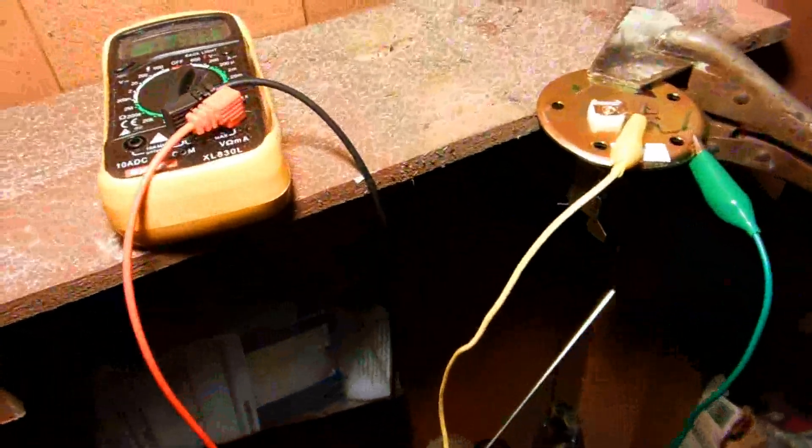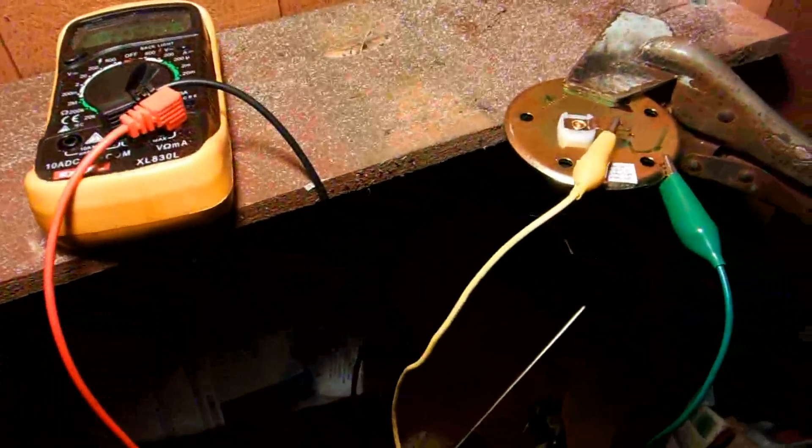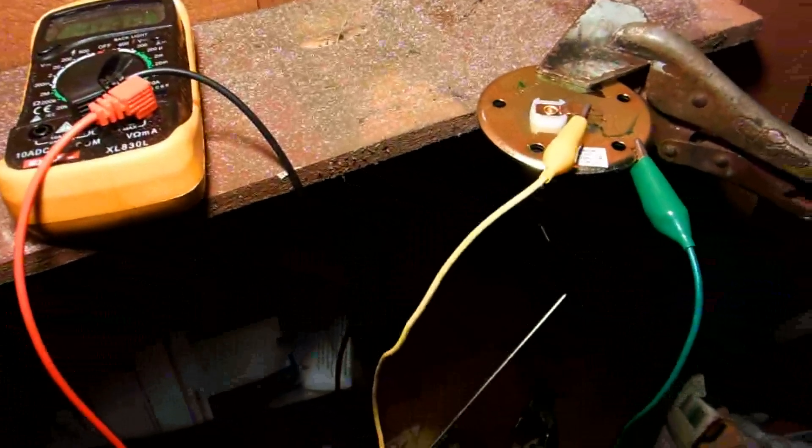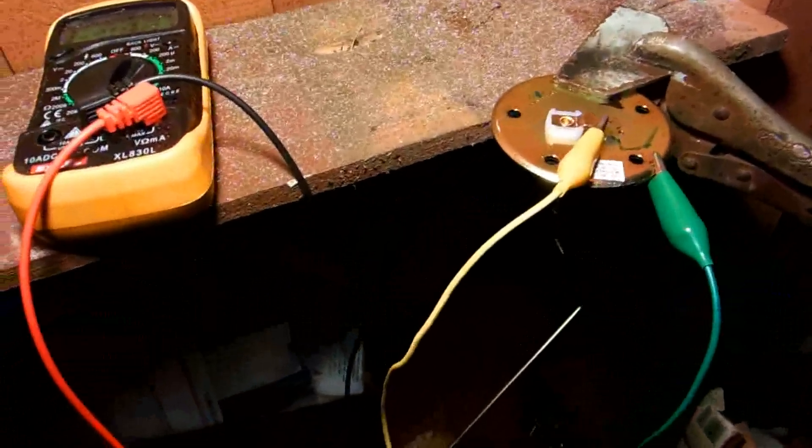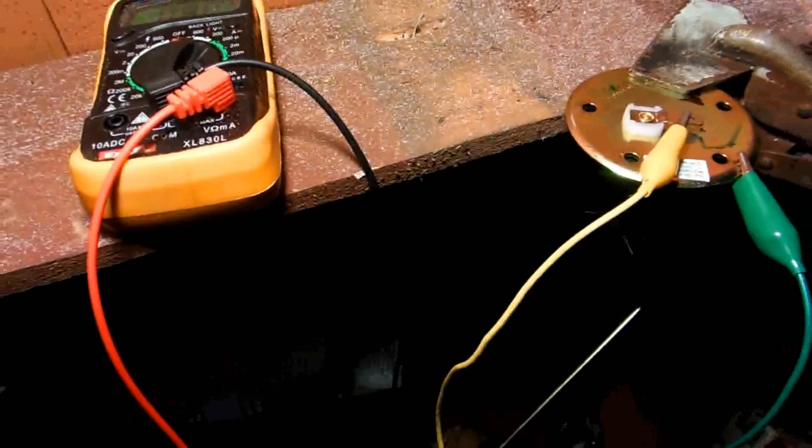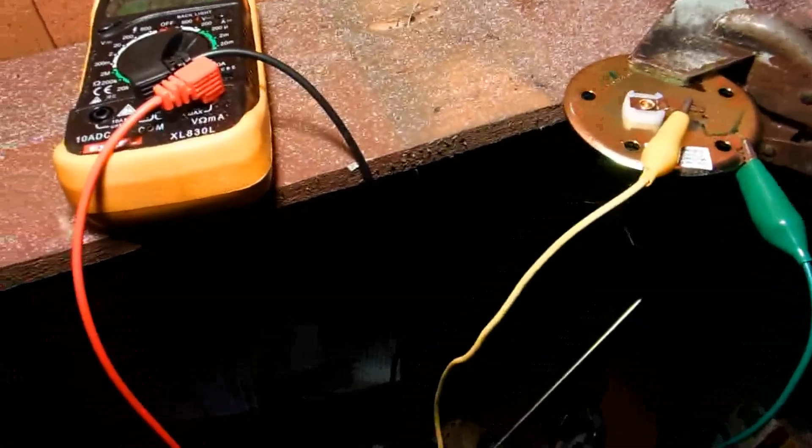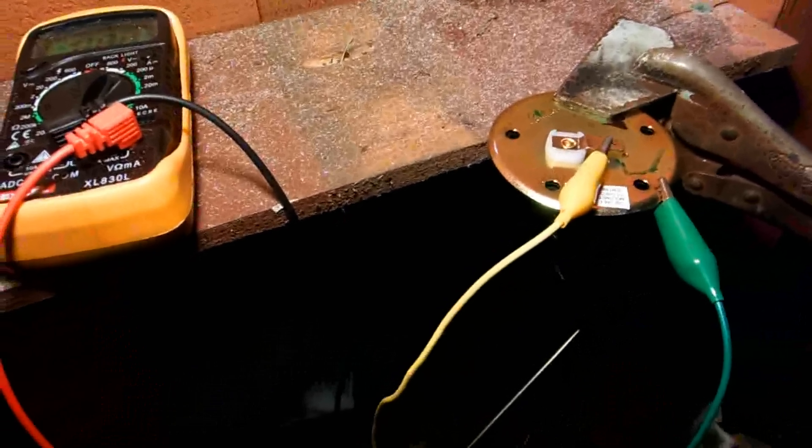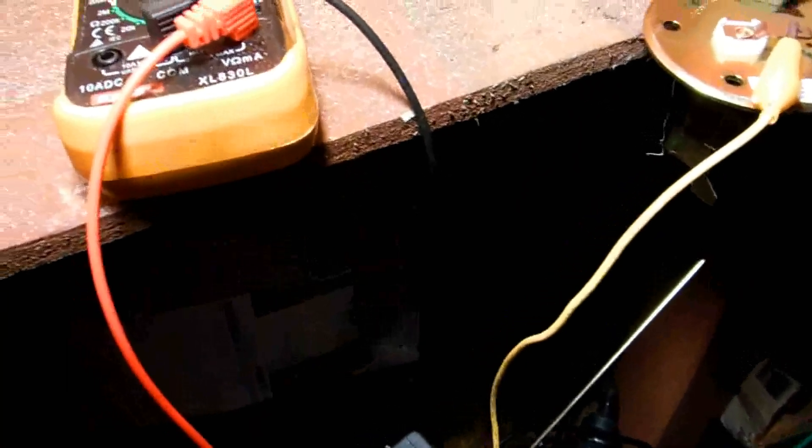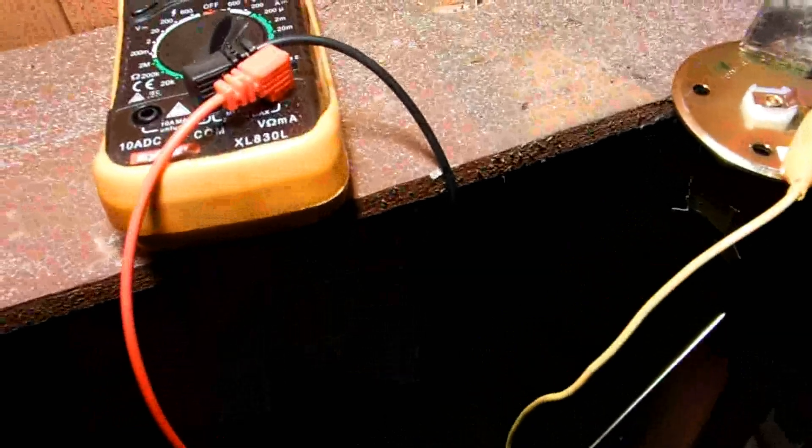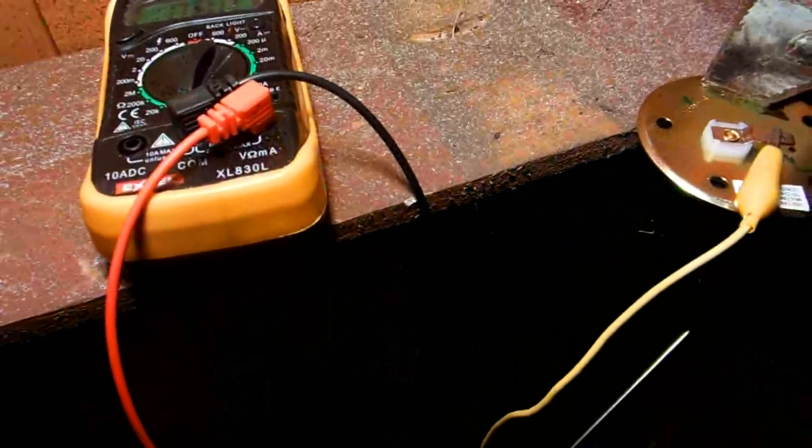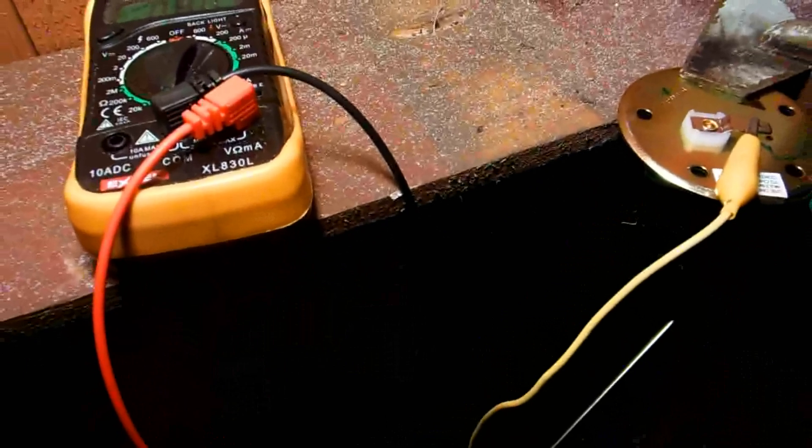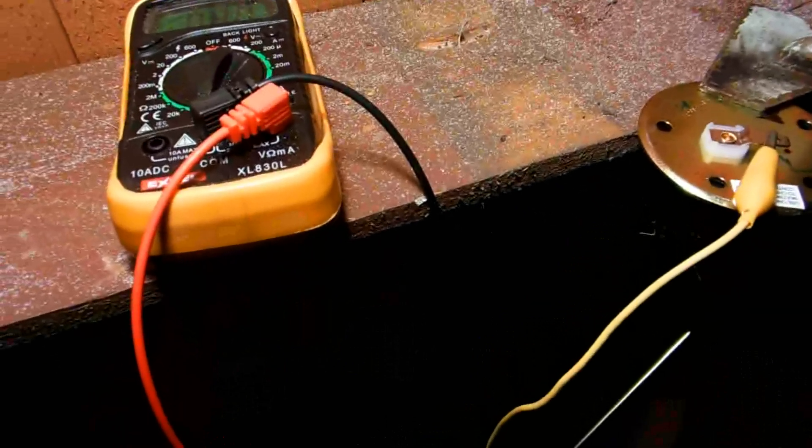I was going to show this setup, the float assembly, and explain how it works when the gas tank was out of the Jeep, but it's actually easier to show it when it's installed. I got a new one here and I may not even have a problem with the old one, but let me explain this because it will tell you if the problem is the float.